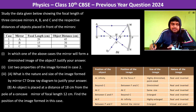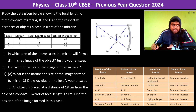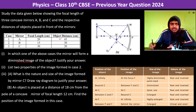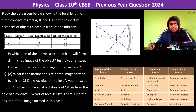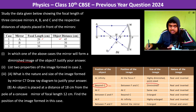Looking at this table, we need to determine in which case the mirror will form a diminished image. In the first case, the object is beyond 2f, that is beyond the centre of curvature. Since the focal length is 20, the centre of curvature is at 40. Beyond the centre of curvature, the mirror gives a diminished image.